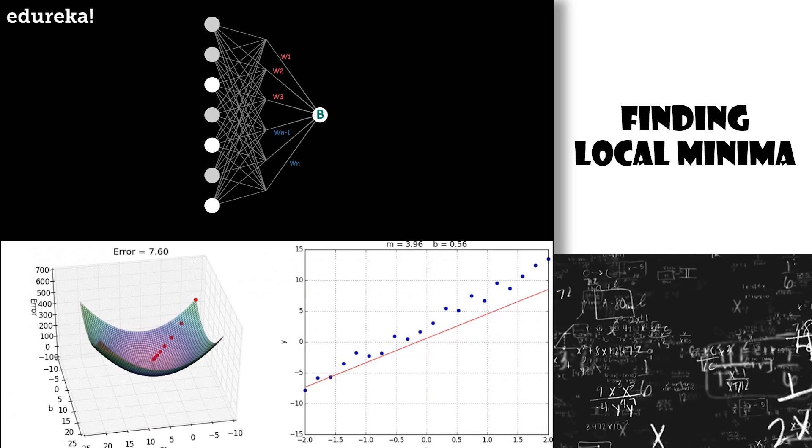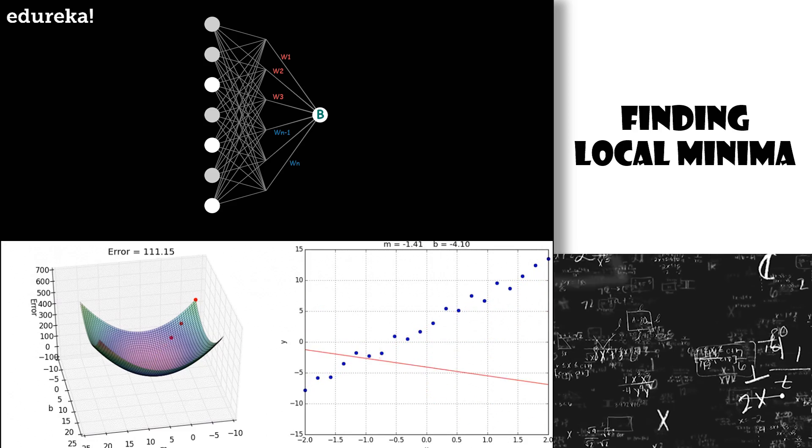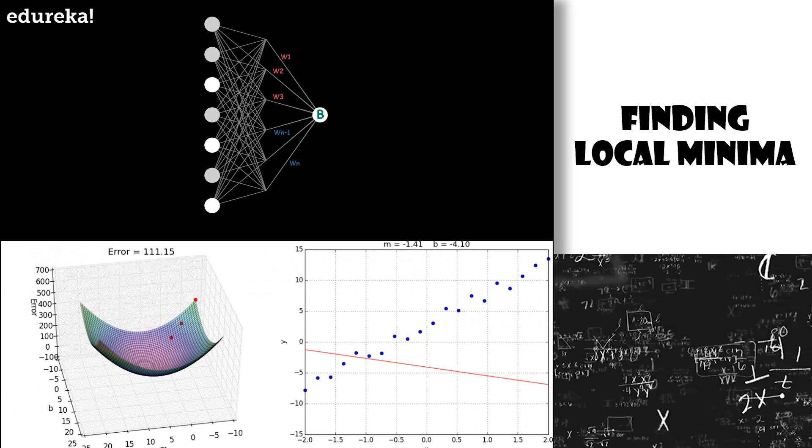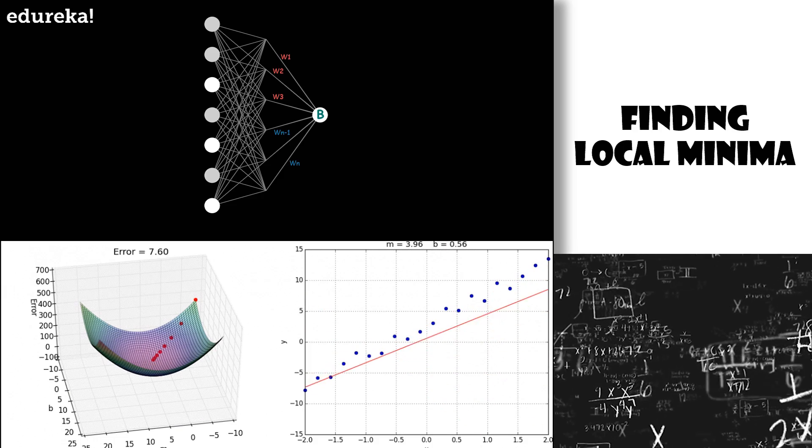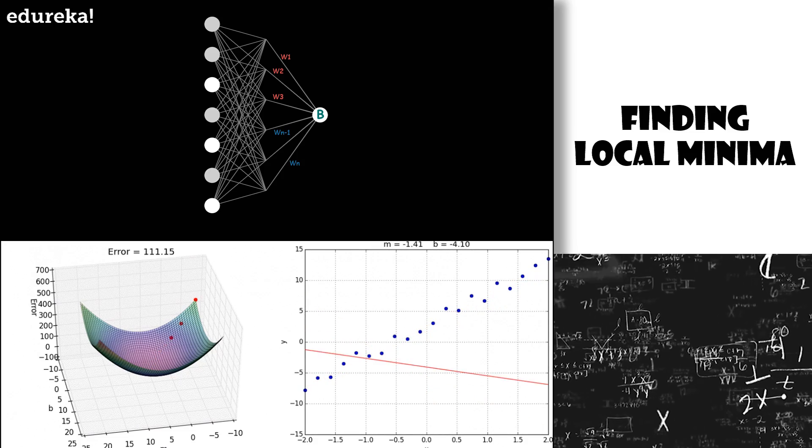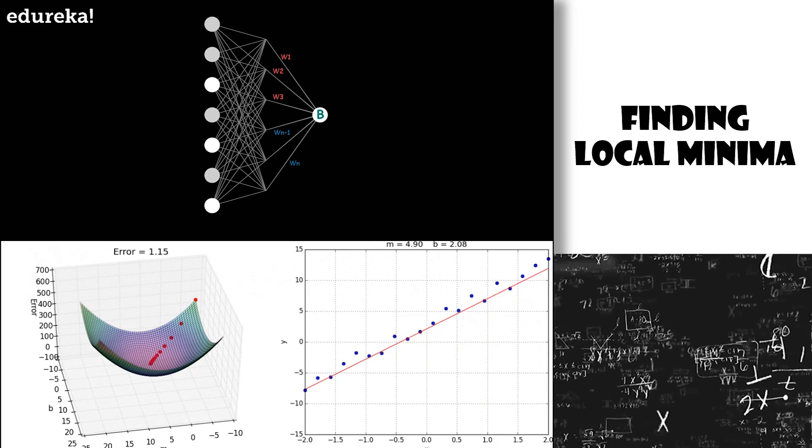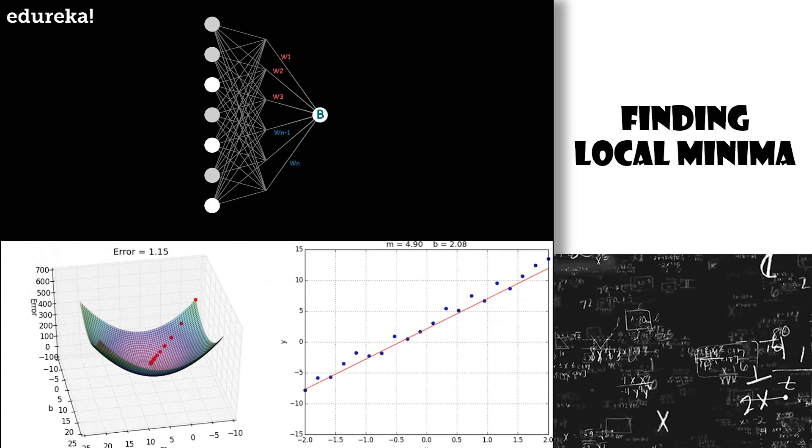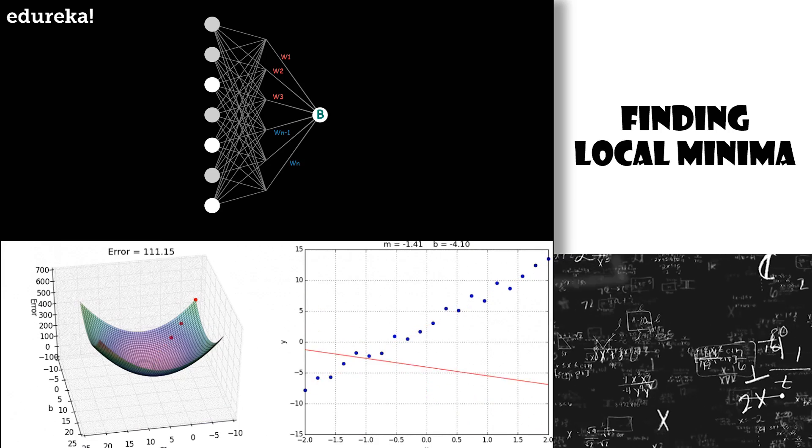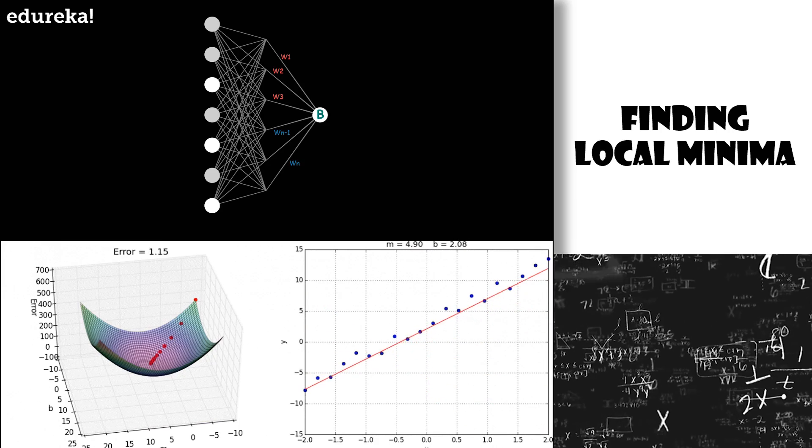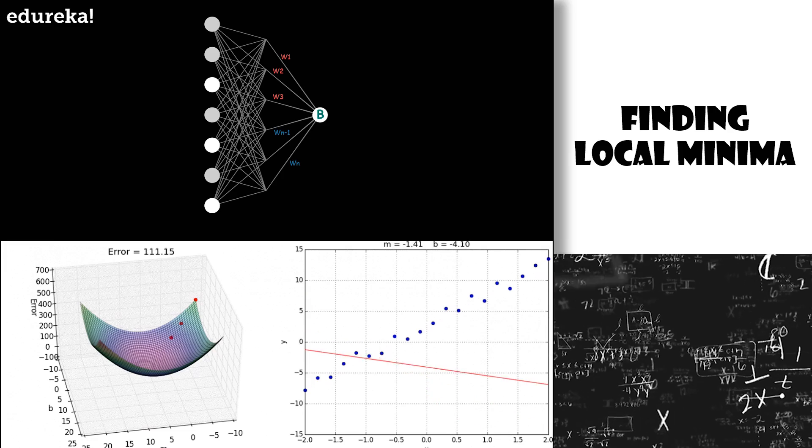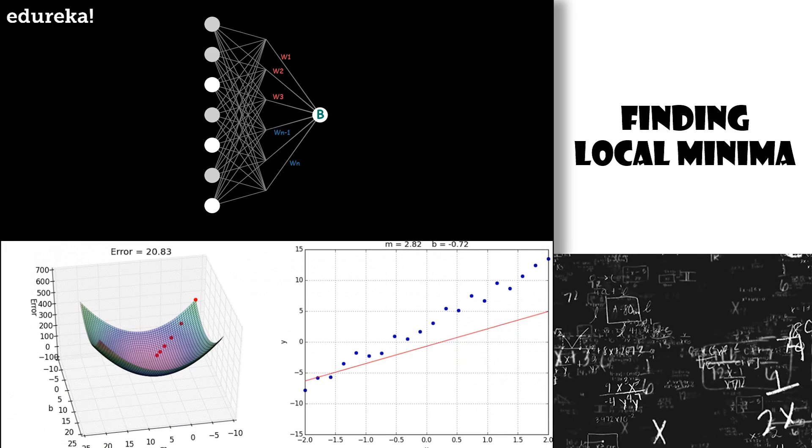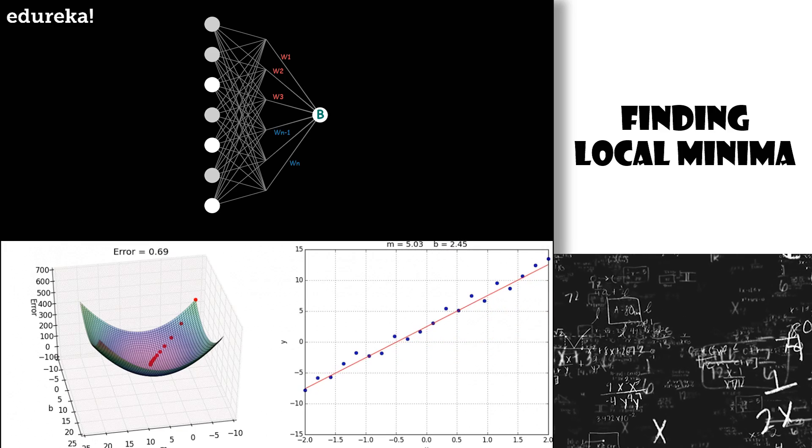Now people familiar with multivariable calculus will know that the gradient of a function gives you the direction of the steepest ascent. Basically, which direction should you step to increase the function most quickly? Naturally enough, taking the negative of that gradient gives you the direction to step that decreases the function most quickly. The algorithm for computing this gradient efficiently, which is the heart of how a neural network learns, is also known as back propagation. So this process of repeatedly nudging an input of a function by some multiple of the negative gradient is known as gradient descent.